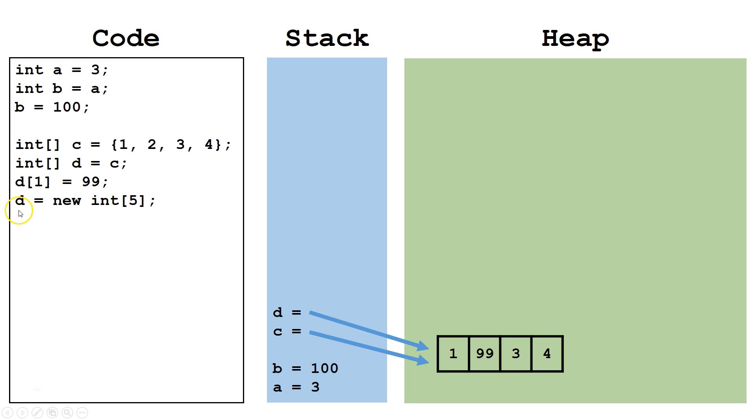Here, we are changing D again. However, we are causing D to point at a brand new object, an integer array of size 5. We move the pointer for D to point at the new integer array. C and D no longer have a connection because they are pointing at different objects on the heap.